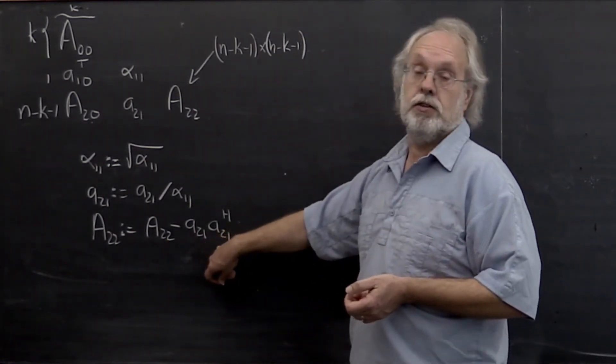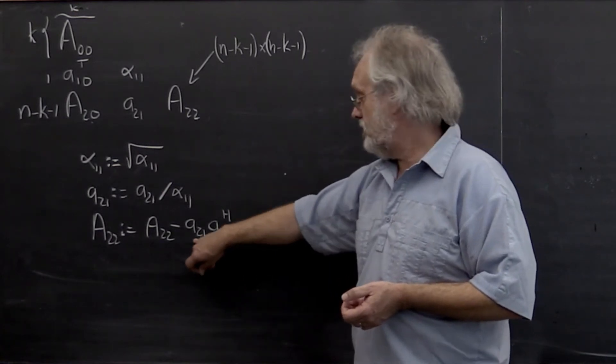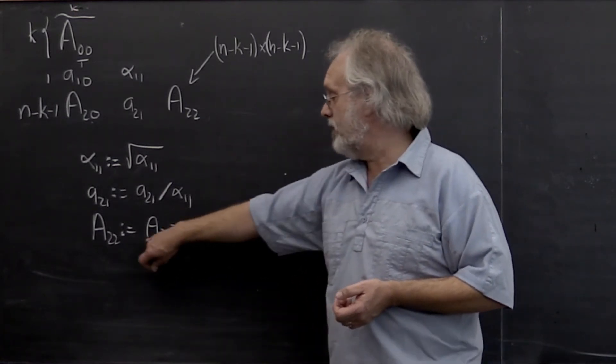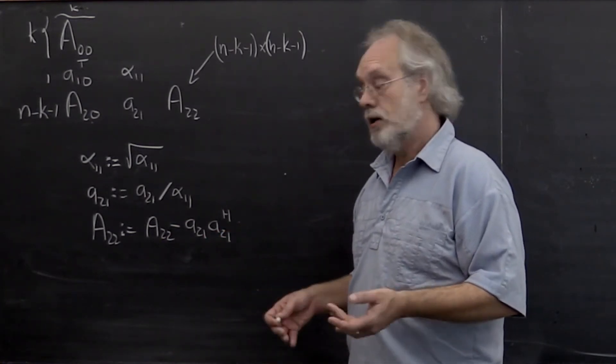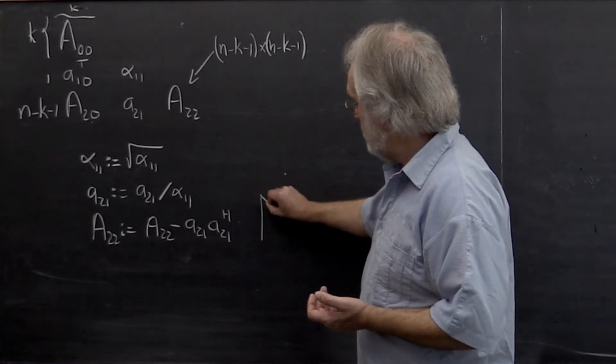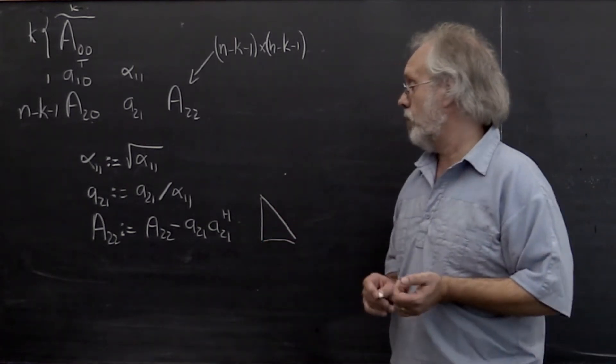This is where the computational expense is. Now this here is an outer product. So we're updating matrix A2 2 with an outer product. We call that a rank 1 update. But notice that we only need to update the lower triangular part of that.